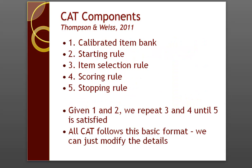There are five components of a CAT. First, there's a calibrated item bank. Then you need to specify a starting rule for the CAT — that is, how do you want the test to start for each student? Then an item selection rule, which is what calculations you want to go into selecting the next item. A scoring rule to score examinees after each item. And then lastly, a stopping rule — how are you going to stop the test?